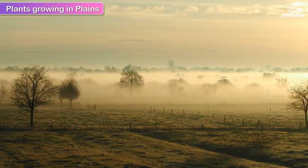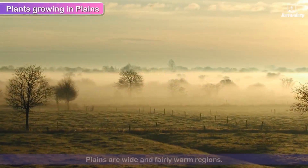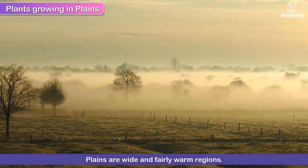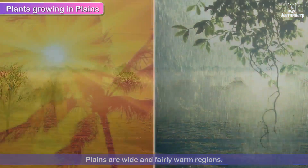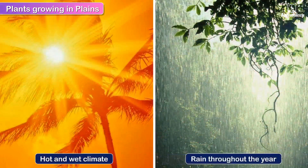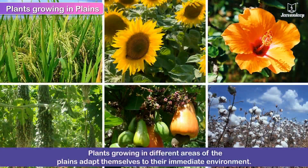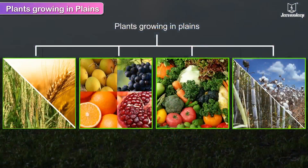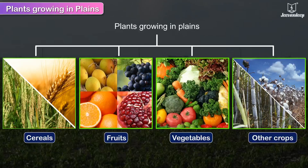Plants growing in plains. Plains are wide and fairly warm regions. Some areas in the plains experience a hot and wet climate while in some others it rains all through the year. Naturally, plants growing in different areas of the plains adapt themselves to their immediate environment. Useful plants growing in the plains include cereals, fruits, vegetables and other crops.